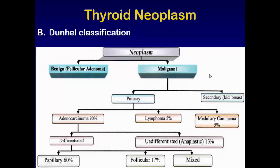Now we will talk about the fourth group — thyroid neoplasm. Using the standard classification, thyroid neoplasms are divided into benign and malignant. The benign neoplasm is the follicular adenoma — there is no papillary adenoma, as papillary tumors are always malignant. Malignant tumors are divided into primary and secondary; secondary comes from kidney, breast, or elsewhere. Primary is divided into adenocarcinoma (90%), lymphoma (4-5%), and medullary carcinoma (5-6%). Adenocarcinoma is divided into differentiated and undifferentiated (anaplastic, ~13%). Differentiated types: papillary carcinoma 60%, follicular 17%, and some mixed cases managed as papillary carcinoma.